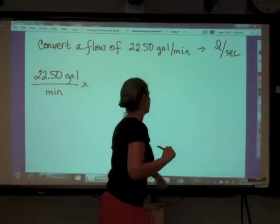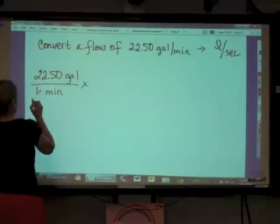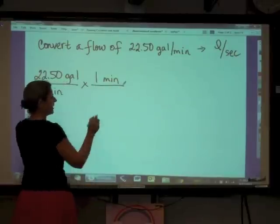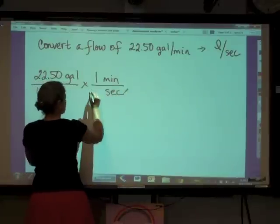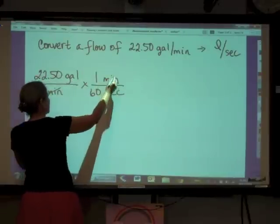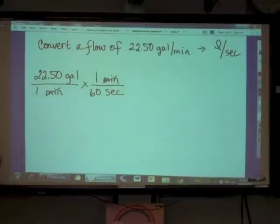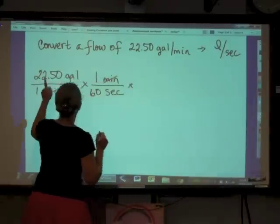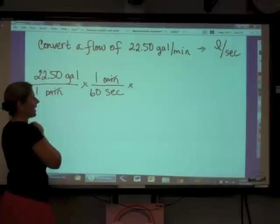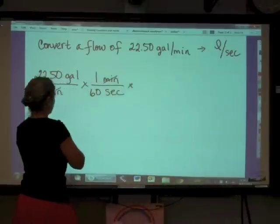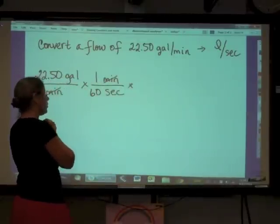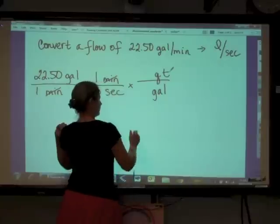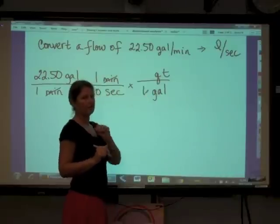I've got a minute here, and for every one minute how many seconds do I have? I have 60. So great, my minutes cancel and I've got seconds in my denominator, and that's what I need. Now let's convert 22.5 gallons into liters. I'm going to first of all convert gallons into quarts. So I've got a gallon and a quart. How many quarts per gallon? Four.